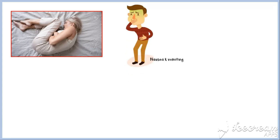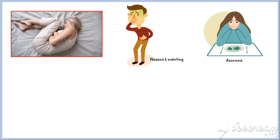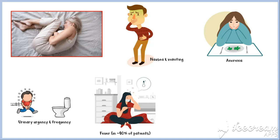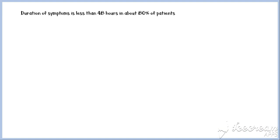Other associated symptoms may include nausea and vomiting, anorexia, urinary urgency and frequency, and fever, which is seen in about 40% of patients. Some atypical symptoms of appendicitis include diarrhea, indigestion, and malaise. The duration of symptoms is less than 48 hours in approximately 80% of adults, but tends to be longer in elderly patients and in those with perforation.